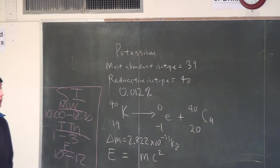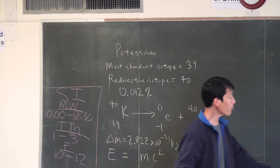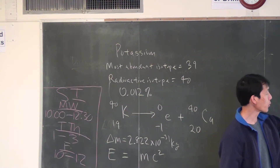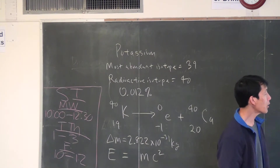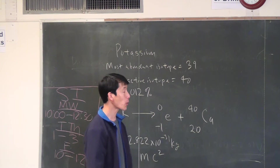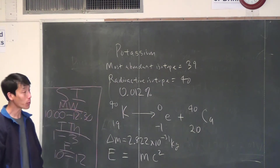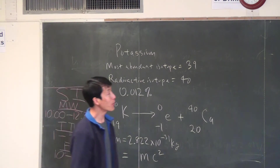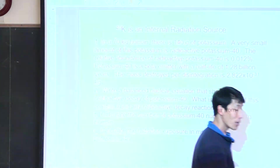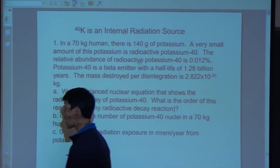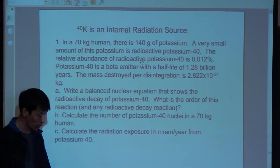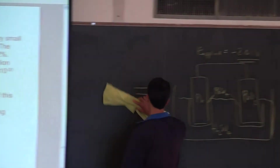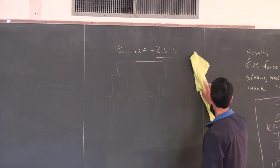We want to calculate the radiation exposure in millirem per year for potassium-40, but first let's calculate the number of potassium-40 nuclei in a 70-kilogram human for part B. Given that there's 140 grams of potassium in a 70-kilogram human, can we figure out the number of potassium-40 nuclei?